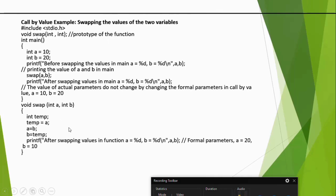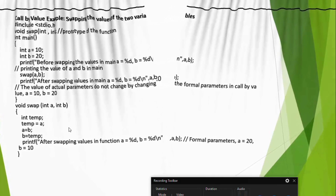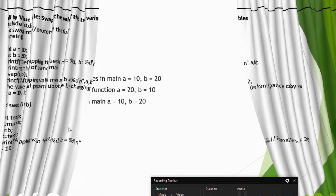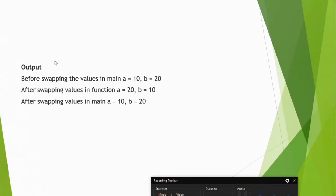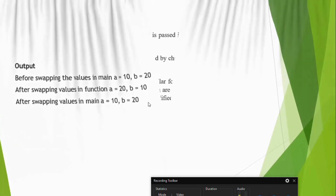Just the value gets copied. Initially 10 and 20, and after swapping within the swap function it prints 20 and 10. But if you give a print statement after the function call, it will give 10 and 20.